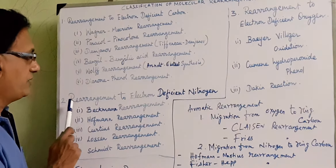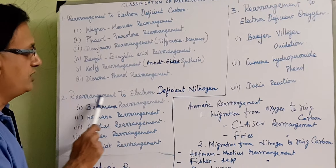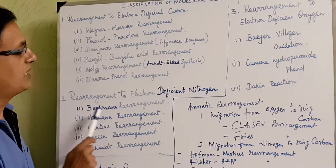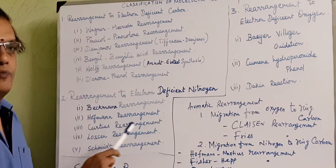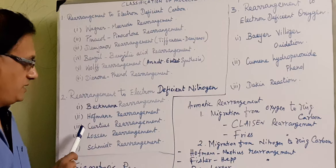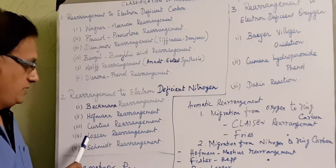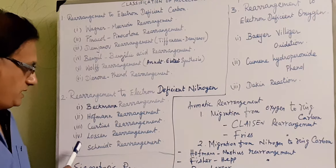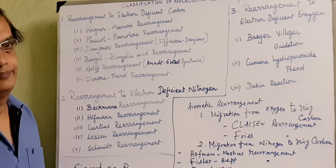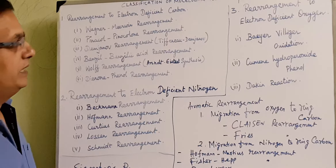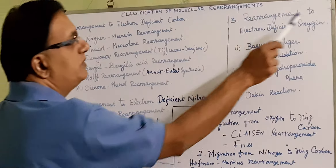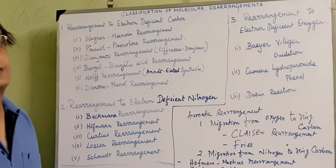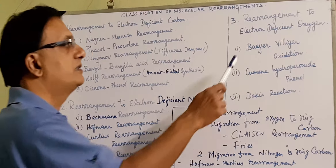In the case of rearrangement to electron-deficient nitrogen, the examples are: Beckmann rearrangement, Hofmann rearrangement, Curtius rearrangement, Lossen rearrangement, and Schmidt rearrangement.